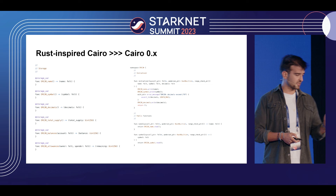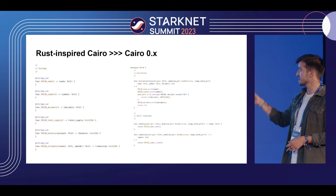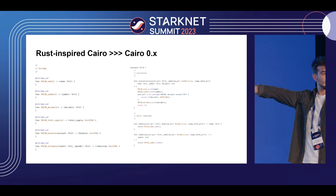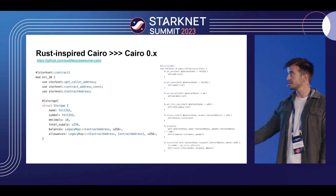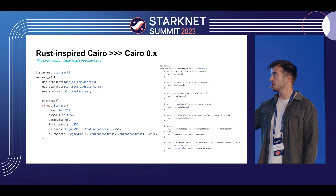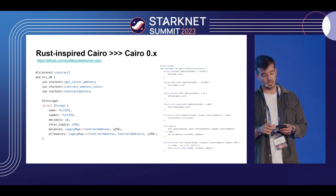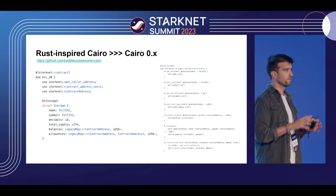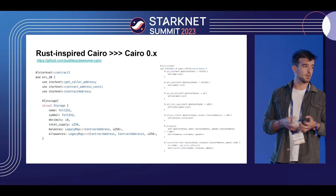It gets even worse the more you look at the Cairo 0.x code — like this ERC-20 snippet. You need to declare a bunch of functions with no body, whereas now you have a struct for storage, mark the storage, and implement things. On the right it looks very Rusty. It could still get better, but we're already on the right path using semantics developers are happy with. Big shout out to the Cairo 1 developers — it has a borrow checker under the hood and many clearly Rust-inspired features, though in some places it deviates, like the @contract_state pattern which doesn't exist in Rust.